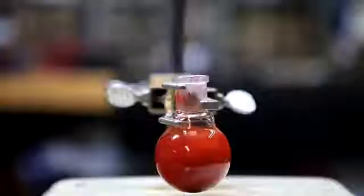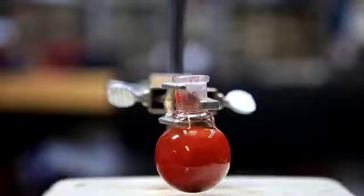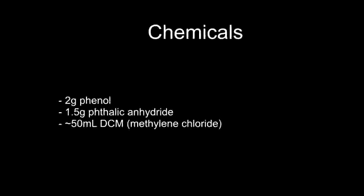Phenolphthalein is an extremely useful acid-base indicator and medically it used to be used as a laxative. For this experiment I used 2g of phenol, 1.5g of phthalic anhydride and I think having about 50ml of DCM would be good.